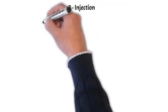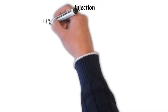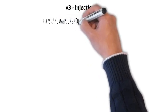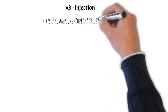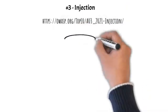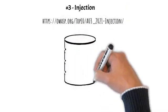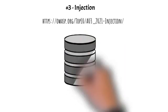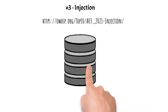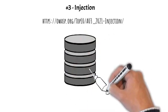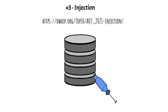Number 3: Injection. Slides down to the third position. 94% of applications were tested for some form of injection, and the 33 CWEs mapped into this category have the second most occurrences in applications. Cross-site scripting is now part of this category in this edition.